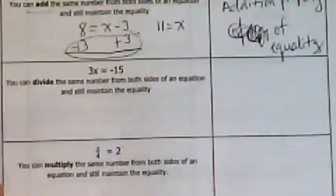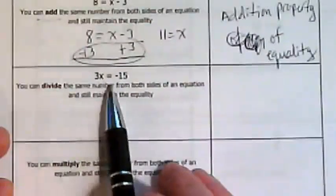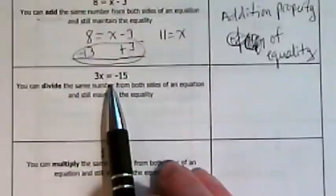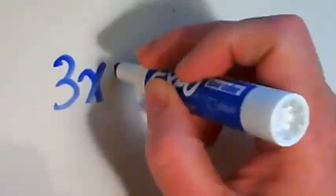So let's look at this next example. This is 3 times x is equal to negative 15. I'm going to use my whiteboard to show that. So I have 3 times x, and I know it's 3 times x because that 3 and that x are smooshed together. That's 3x, which means they're being multiplied.